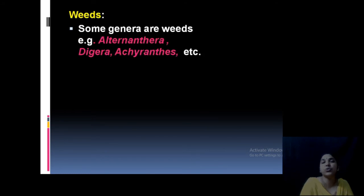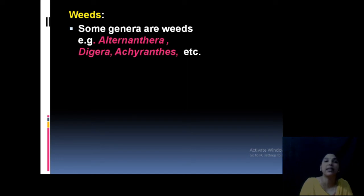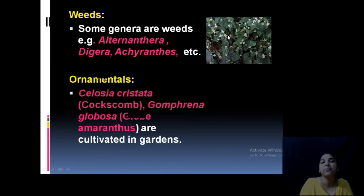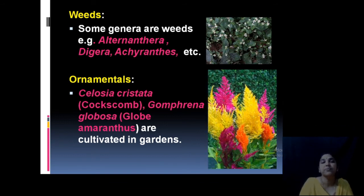Regarding negative economic impact: many members are weeds. Alternanthera is fast-spreading in our area nowadays — Alternanthera and Achyranthes and Digera are all weeds that absorb large amounts of nutrients. Some are grown as ornamentals — very important examples are Celosia, known as 'cock's comb' or 'Adarmanali', and Amaranthus. Celosia is cultivated in gardens in many different colors and varieties.